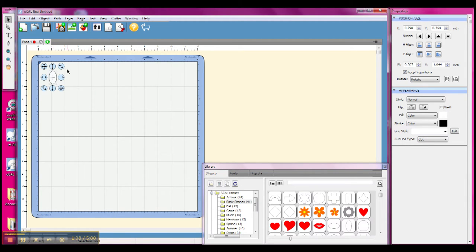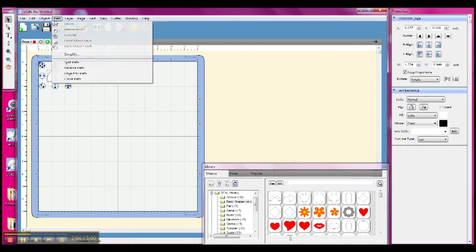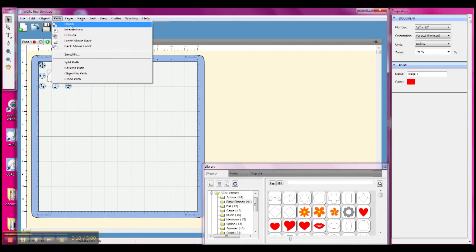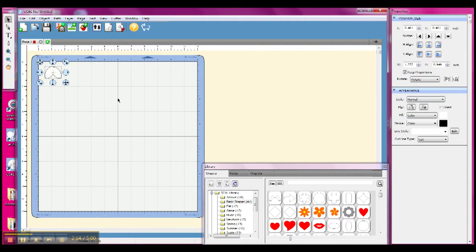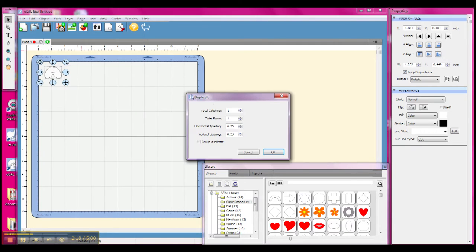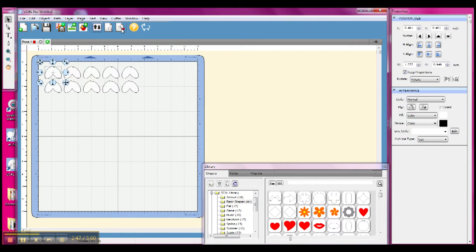Then I used the ovals, and this is just from the basic shapes that come with the Sizzix Eclipse 2, these aren't any shapes that I bought. So I used the ovals and I laid them out and kind of rotated them around and then I went to the path menu up at the top and grouped them, and then I also used the duplicate option to create a set of ten.